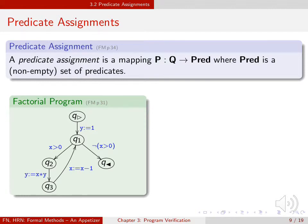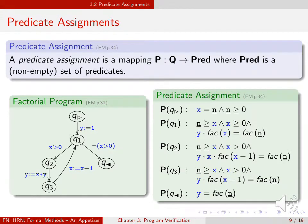Let us reconsider our factorial program and a predicate assignment. The predicate at the initial node is the one we already discussed, and so is the predicate at the final node.